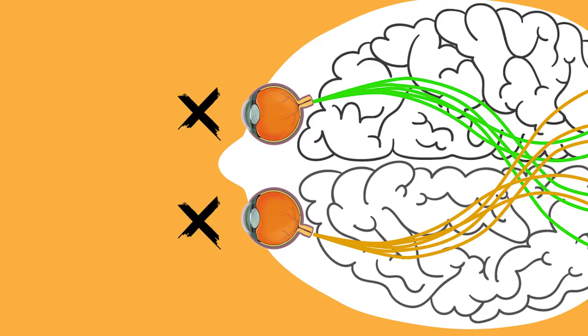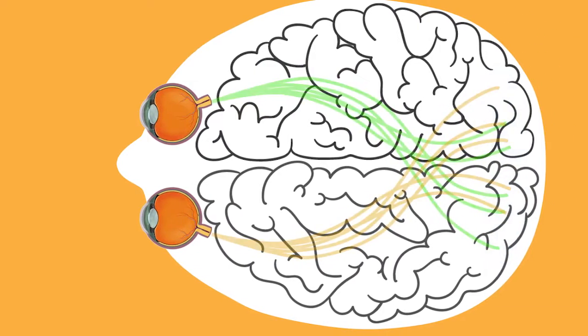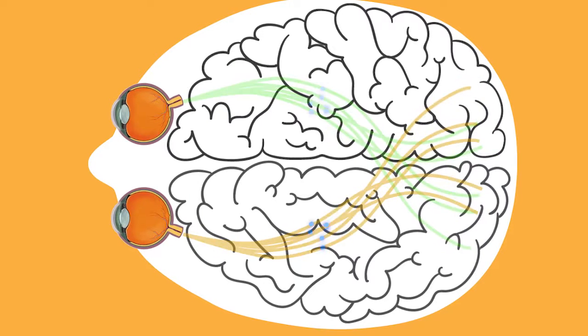If there is poor vision in both eyes, it is possible the brain will not make good connections in either eye, which can also result in amblyopia in both eyes.